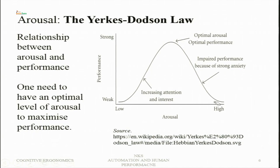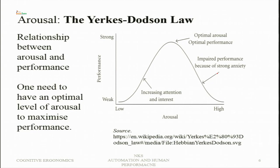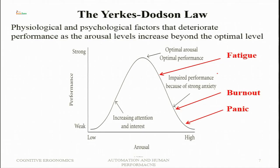For cognitively demanding tasks, a high level of arousal is needed, but not too high — because then errors start appearing. When performance goes down, three important things happen. First is fatigue: when arousal level is slightly above the optimal level, fatigue sets in. Fatigue is a physiological process, and because of it, responding declines and action selection, action implementation, and execution are all affected.